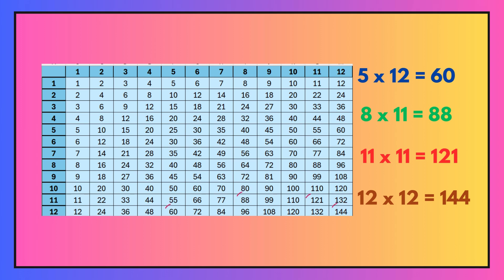So you should have got the following answers. Five times twelve is sixty. Eight times eleven is eighty-eight. Eleven times eleven is a hundred and twenty-one. And twelve times twelve, a hundred and forty-four.